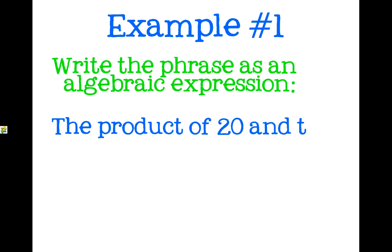So example number one. We're going to translate all of these into math. So we're going to write the phrase as an algebraic expression. We're going to look at the product of 20 and t. Now we're given a letter here, a variable. So that's the one that we're going to use. Now we're going to look at our keyword. Our keyword is product. That means we're going to multiply 20 and t. So there's our answer. 20, the product of 20 and t.